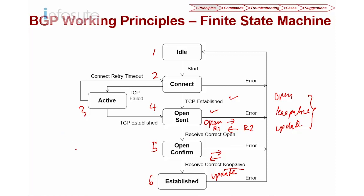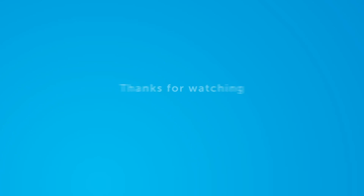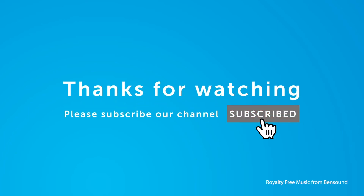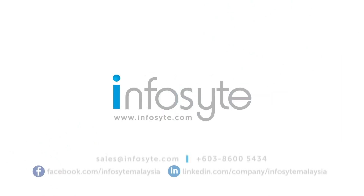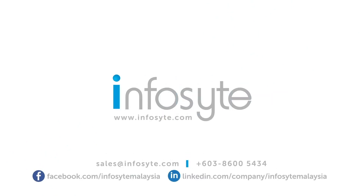To see your finite state machine, you always run the command 'display BGP peer' and look for the established state — this is where your BGP is in good order.